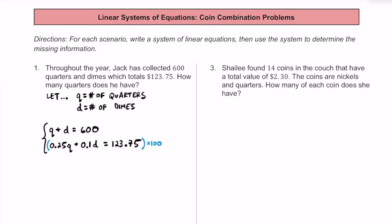If we multiply that entire bottom equation by 100, we end up with 25Q plus 10D equals 12,375. Notice how we don't have any decimals anymore.